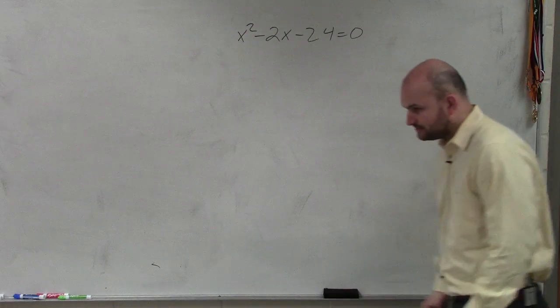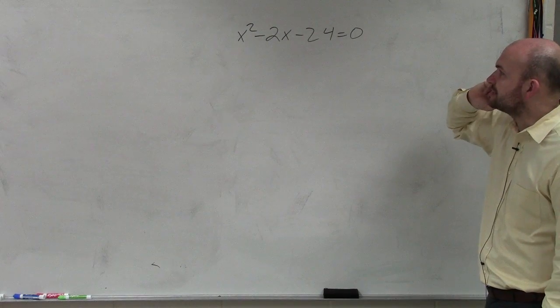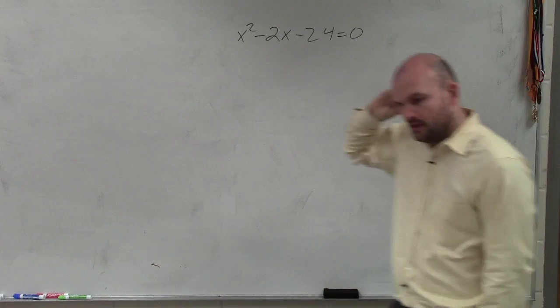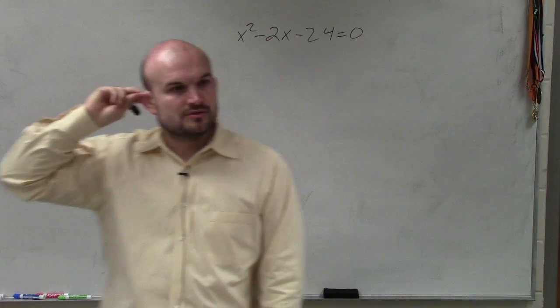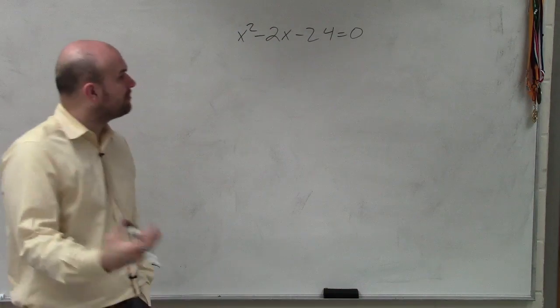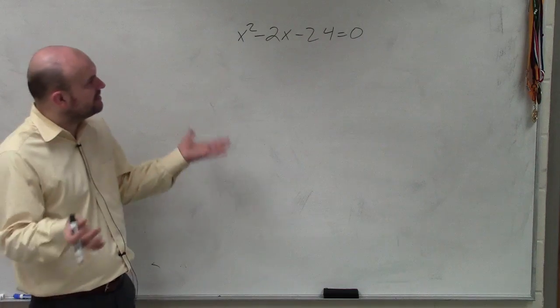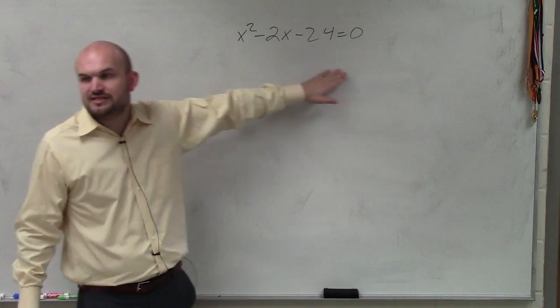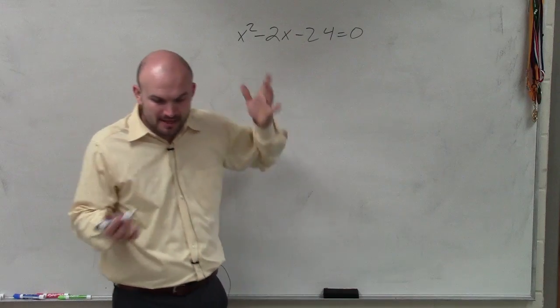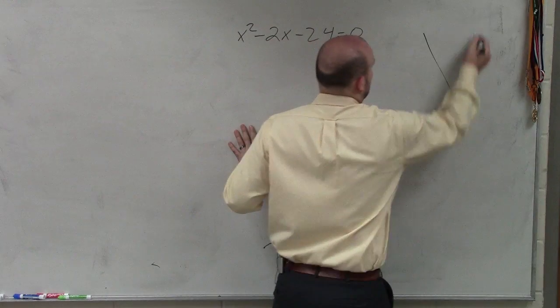Now, first of all, here I have x squared minus 2x minus 24. So when doing a problem that's like this, we always look to factor out the GCF. But you can see there's no common terms that I can factor out. So the next thing we look into is using the diamond method.